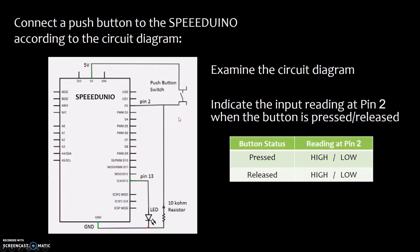Using a breadboard, connect a push button to the Speeduino according to the circuit diagram as shown. The push button is connected to digital pin 2 of the Speeduino. Pin 2 is also connected to a 10 kilo ohm resistor, which is connected to ground.